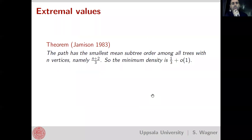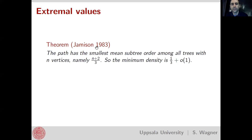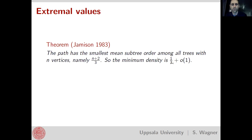The minimum is rather explicit. The smallest possible mean subtree order for a tree with n vertices turns out to be (n+2)/3, attained exactly for the path. So when you divide by n, you always get something greater than a third. The minimum density of a tree with n vertices is therefore one-third plus something that goes to zero — the density doesn't just lie between zero and one, but actually between one-third and one.